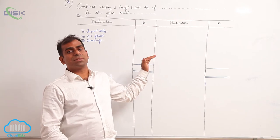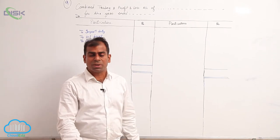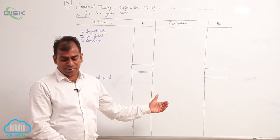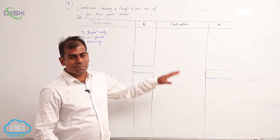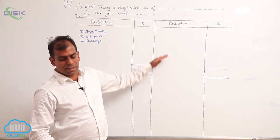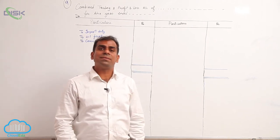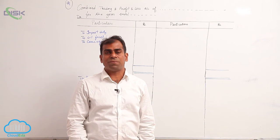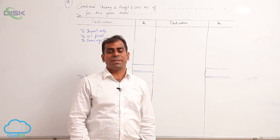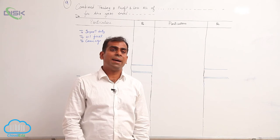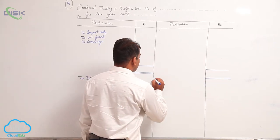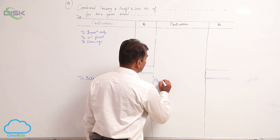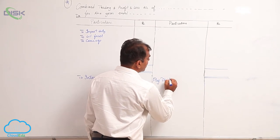Again, I reiterate, only nominal accounts come in trading and P&L account. Discount received, rent received will come in P&L account. Sales will come in trading account. Returns outwards is purchase returns, therefore it should be deducted from purchases. Then you have dividend on shares.